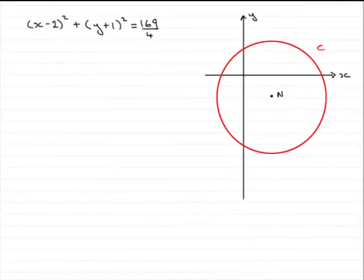In order to do this question, what I've done is started to draw a sketch of the circle C that we're given, and we're told that the center is n. Here's the equation of the circle, and we've got to write down the coordinates of the center.